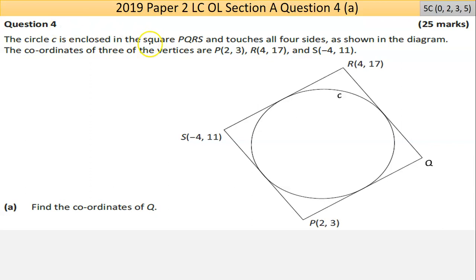So this here is question 4. On first look it is geometry and a circle. I see coordinates written here, so it's most likely coordinate geometry. They say the circle C is enclosed in a square PQRS. The circle is being touched on all four sides. You see there in the diagram. The coordinates of three of the vertices are given to you on the diagram as well.